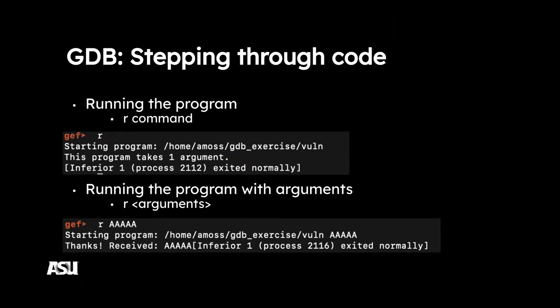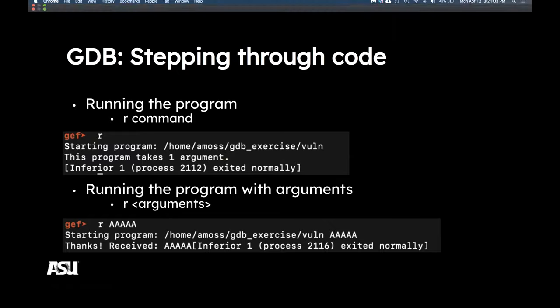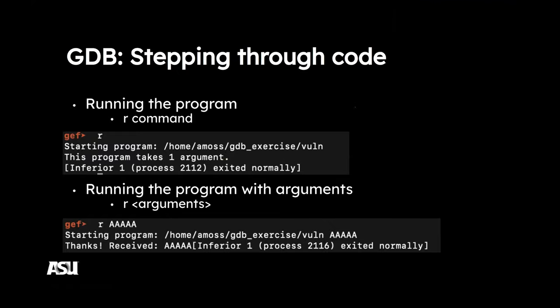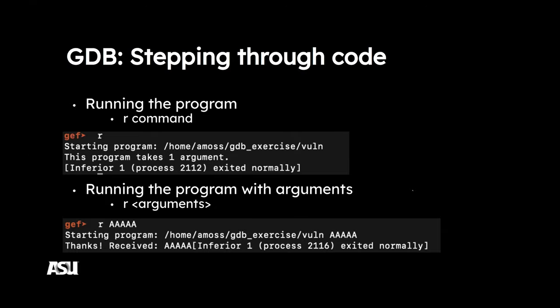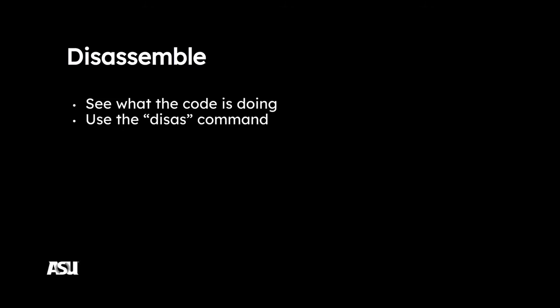The first and easiest command is 'r' for run — you just run the program. On assignment six the program takes command line arguments, so you can do 'run' followed by five A's and the program takes them in and prints them back out. You can also disassemble — that's one of the big ones we'll be doing. You can set breakpoints at certain addresses to see where your program crashes, and there's stepping — going line by line through your code — which makes it a great debugger. Use the 'disas' command, for example 'disas main'.